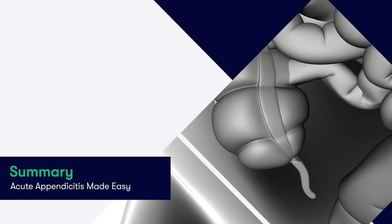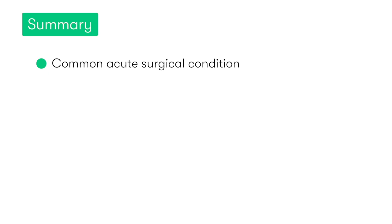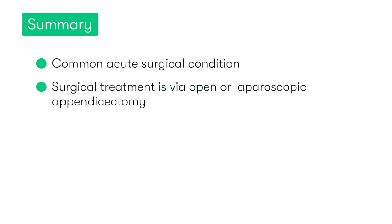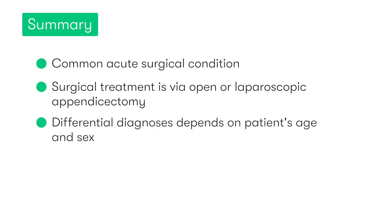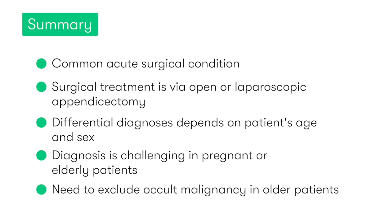Let's recap the main points about acute appendicitis. Appendicitis is one of the most common acute surgical conditions. The standard management is to remove the acutely inflamed appendix via either an open or laparoscopic approach, in addition to giving intravenous antibiotics and fluids. We covered how potential differential diagnoses vary depending on the patient's age and sex, and how diagnosing appendicitis can be more challenging in pregnant patients and the elderly — so a higher degree of suspicion is needed in these groups. Finally, it's really important to remember that older patients successfully managed non-operatively or laparoscopically need follow-up colonoscopy or CT colonography to exclude any occult malignancy.